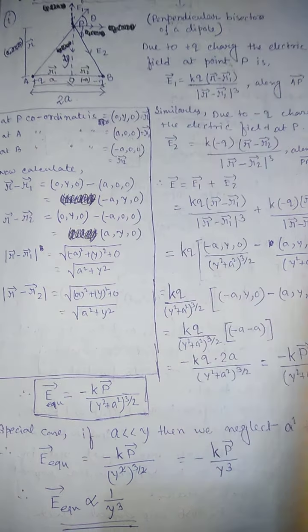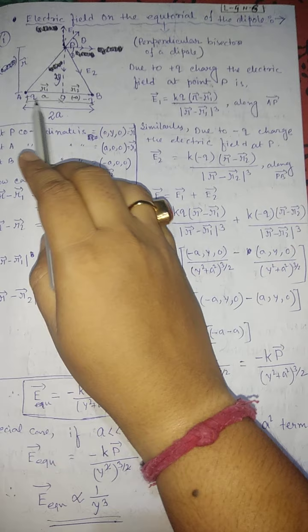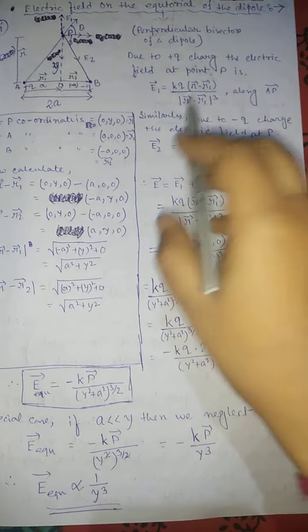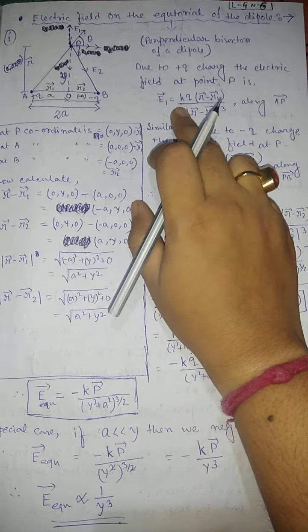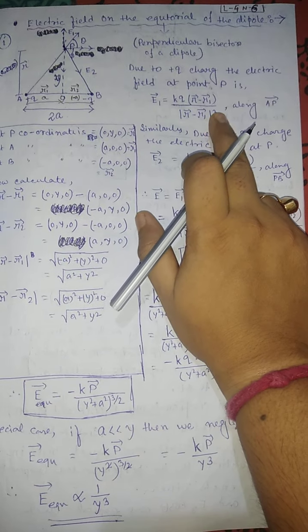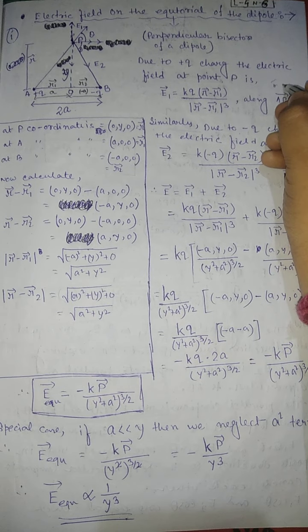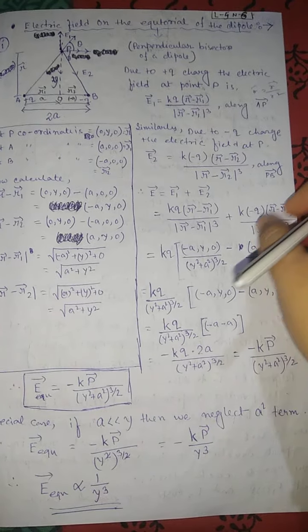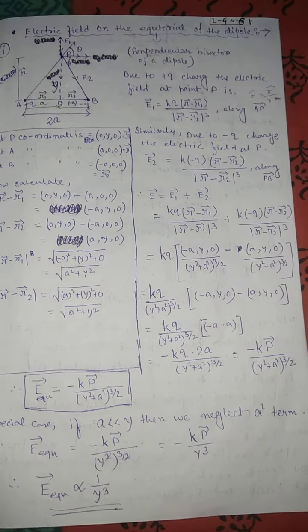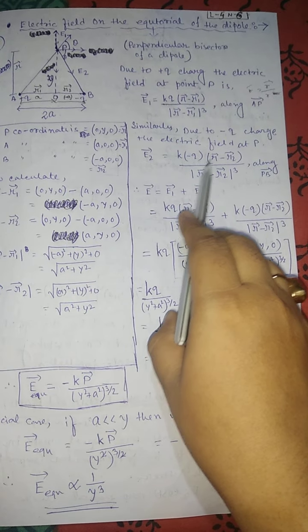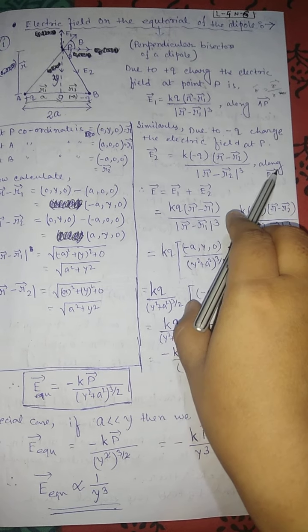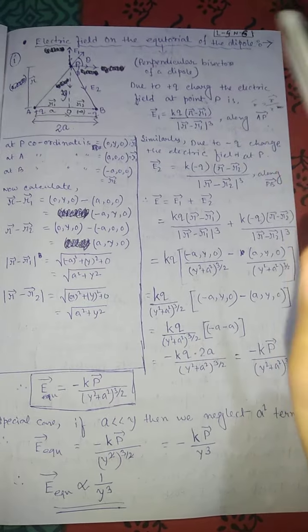The position vector from origin to P is r. The electric field due to the +q charge at point P is E1 = kq(r − r1) / |r − r1|³. Similarly, the electric field due to the −q charge is E2 = k(−q)(r − r2) / |r − r2|³, directed along PB because it is a negative charge.